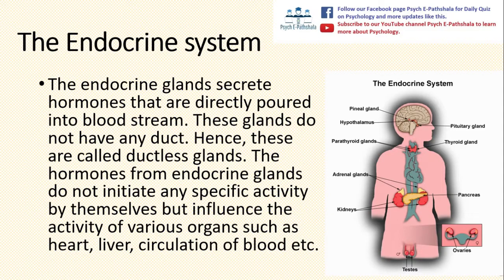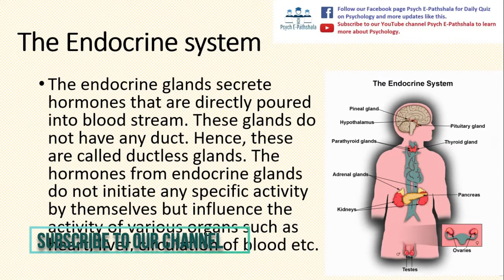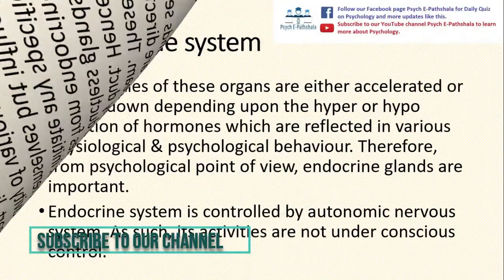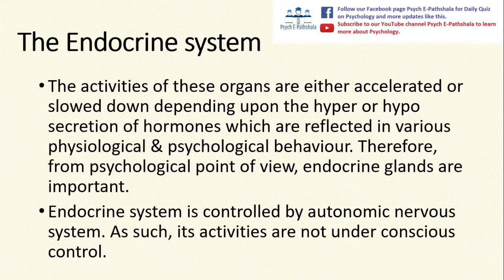The hormones from endocrine glands do not initiate any specific activity by themselves, but influence the activity of various organs such as heart, liver, circulation of blood, etc. The activities of these organs are either accelerated or slowed down depending upon the hyper or hyposecretion of hormones, which are reflected in various physiological and psychological behavior.